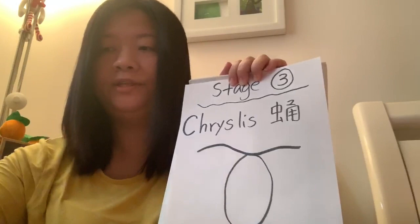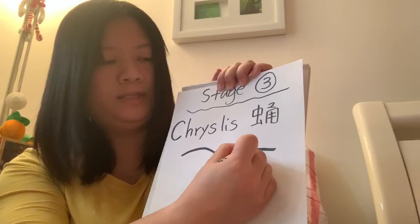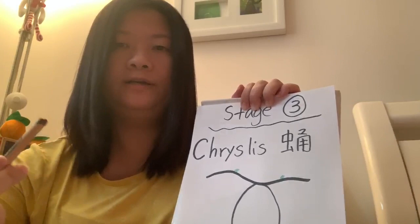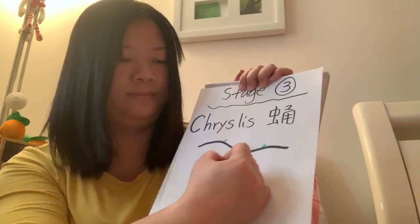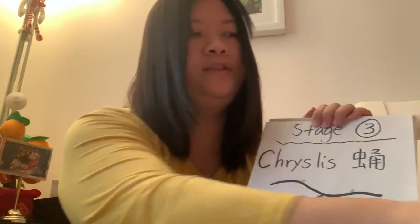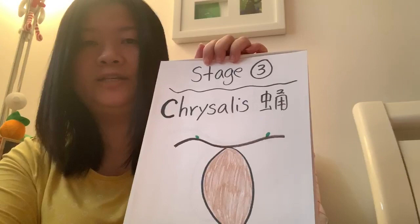After that, if you want to draw some leaves on a branch, you can do so. You can also draw a tree on it. And then we're going to use the brown crayon to color the chrysalis. You need to color everything. Remember to color within the lines. Try your best, okay? So when you finish, your drawing will look like that. So this is the stage three — chrysalis. 蛹。Thank you.